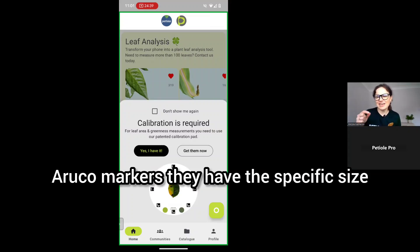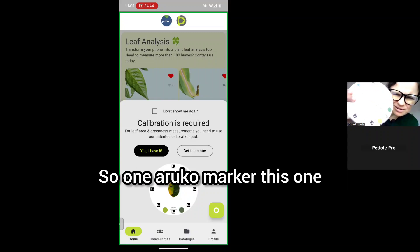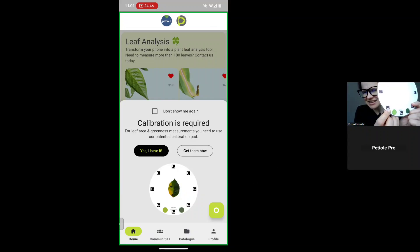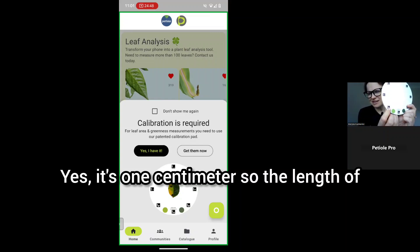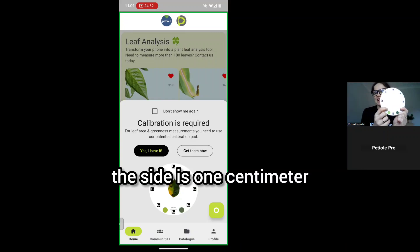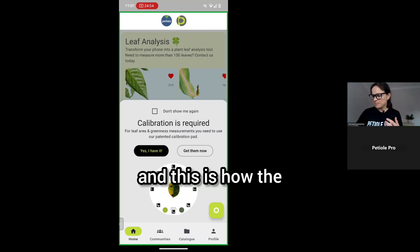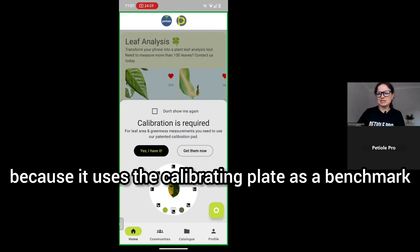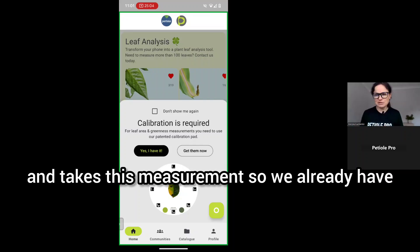They have a specific size. One Aruko marker, here, yes, it's one centimeter. The length of the side is one centimeter. This is how the algorithm inside PTL Pro understands the size because it uses the calibrating plate as a benchmark and takes this measurement.